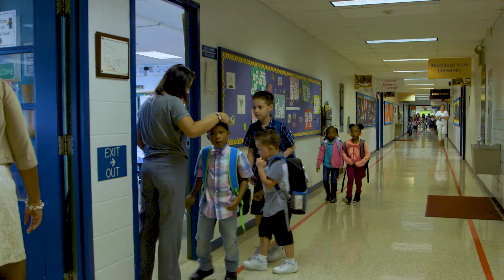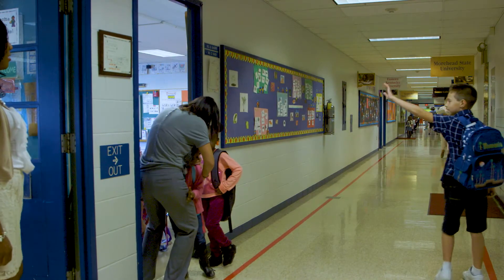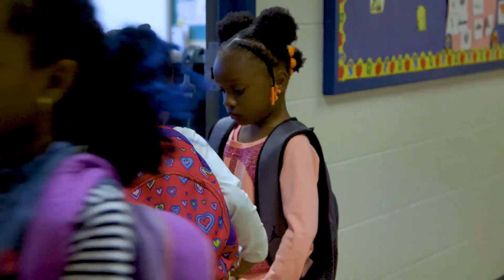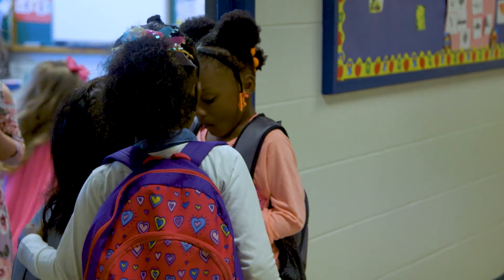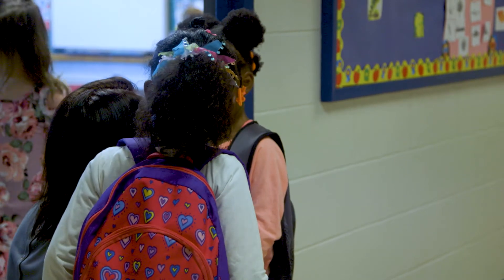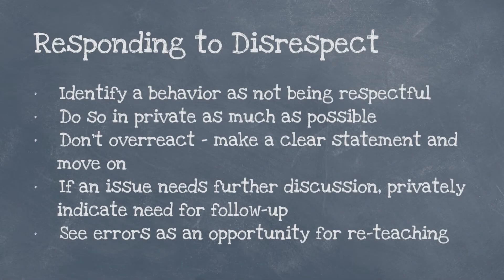The initial response to disrespectful behavior is best done in as neutral a manner as possible. Because disrespect is generally a means of attention-seeking, we don't want to generate more attention, but we also don't want it to remove focus from instruction. A good first response is to talk to the student individually, indicate the behavior is disrespectful, and indicate a need to follow up after instruction.